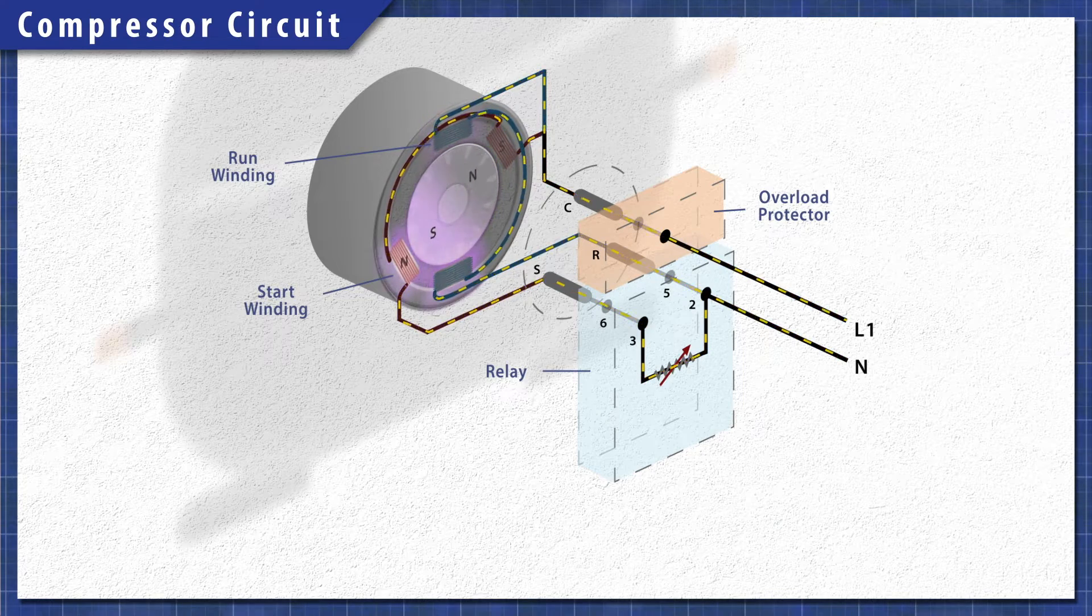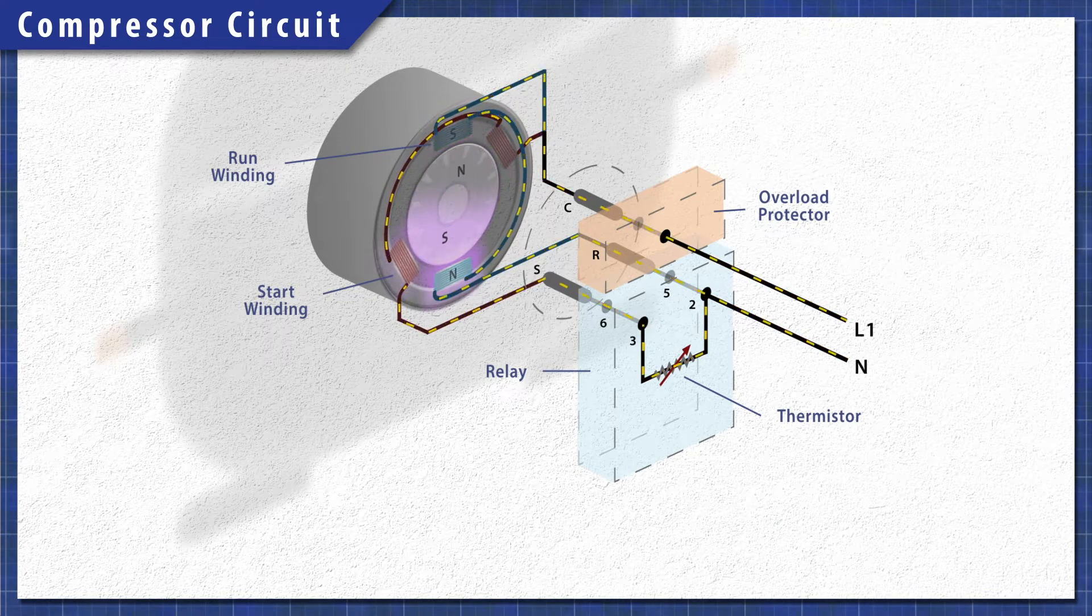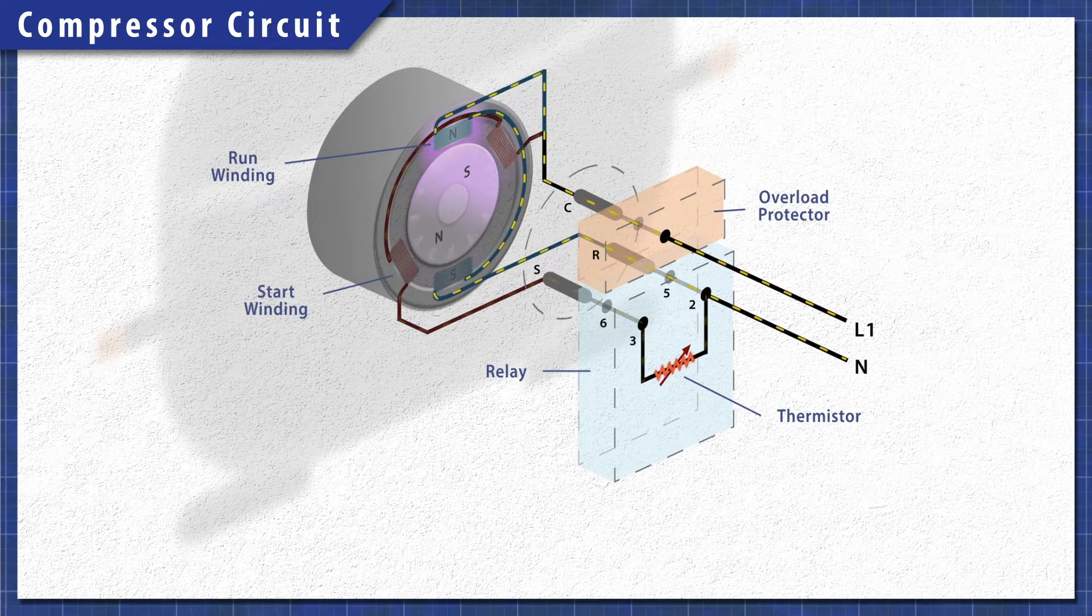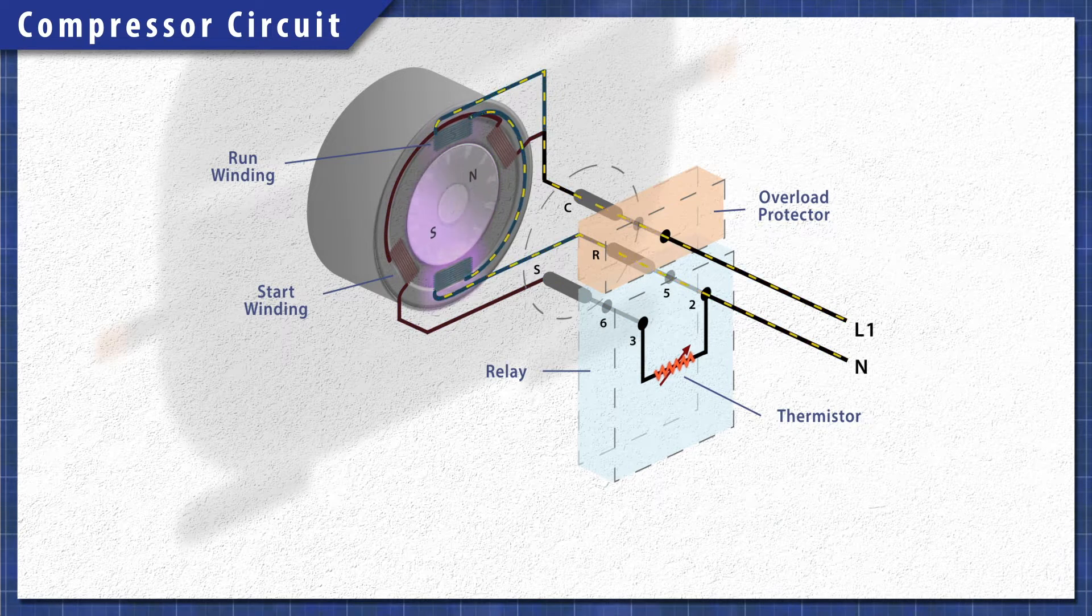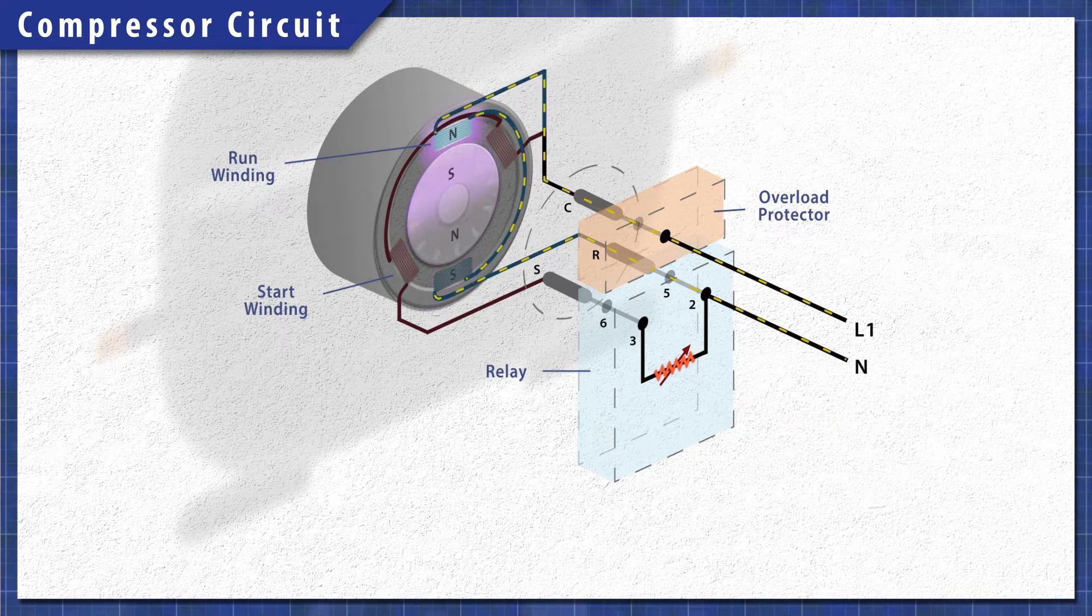Many refrigerators use a relay with a PTC thermistor. This heat sensitive resistor acts like a switch. As the motor starts, the thermistor heats up and disconnects power to the start winding. This prevents it from overheating.